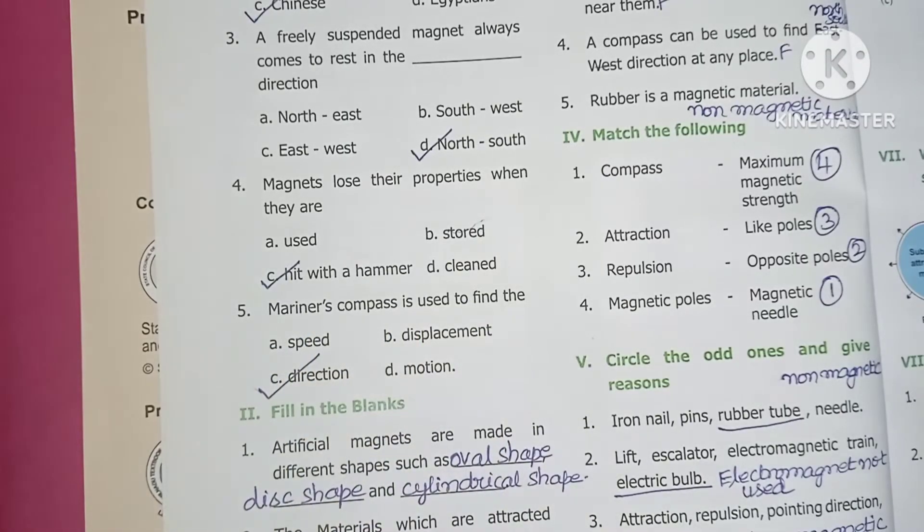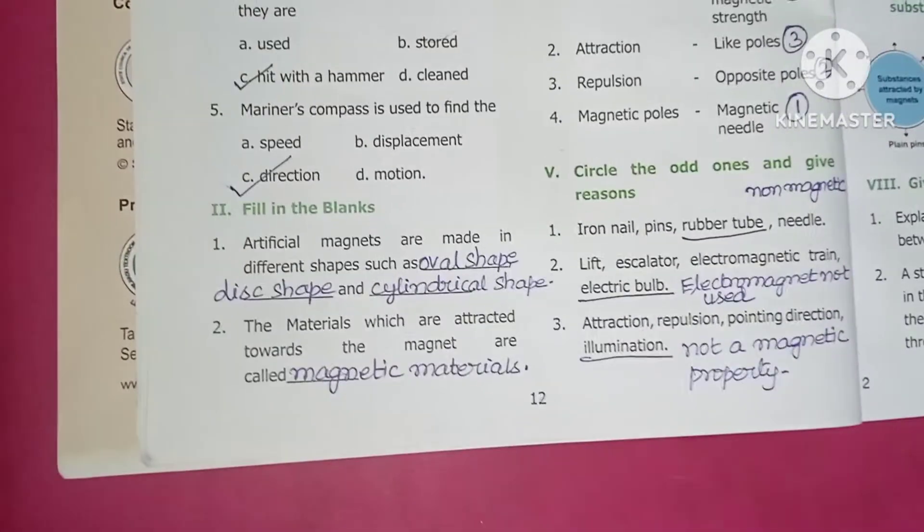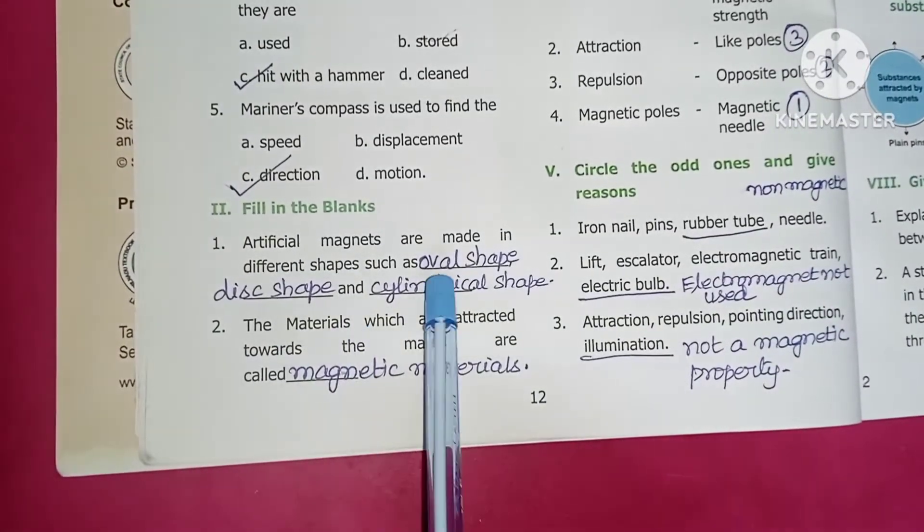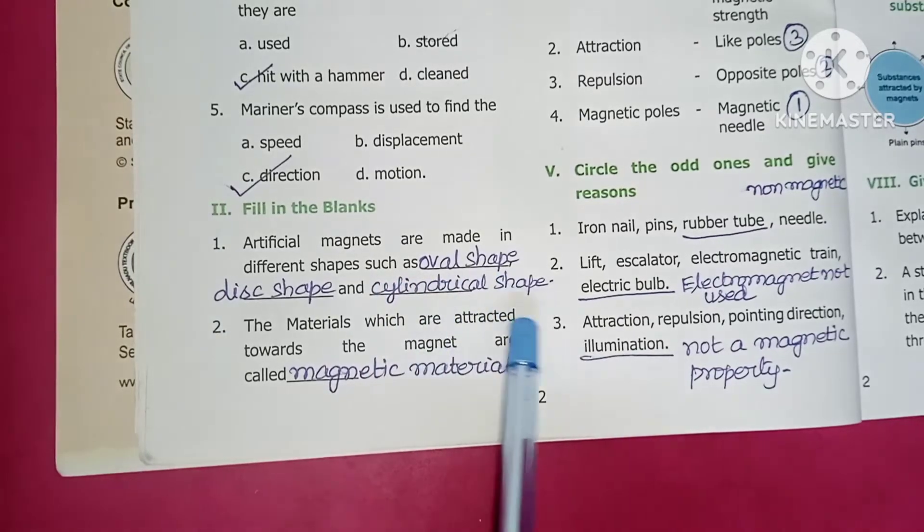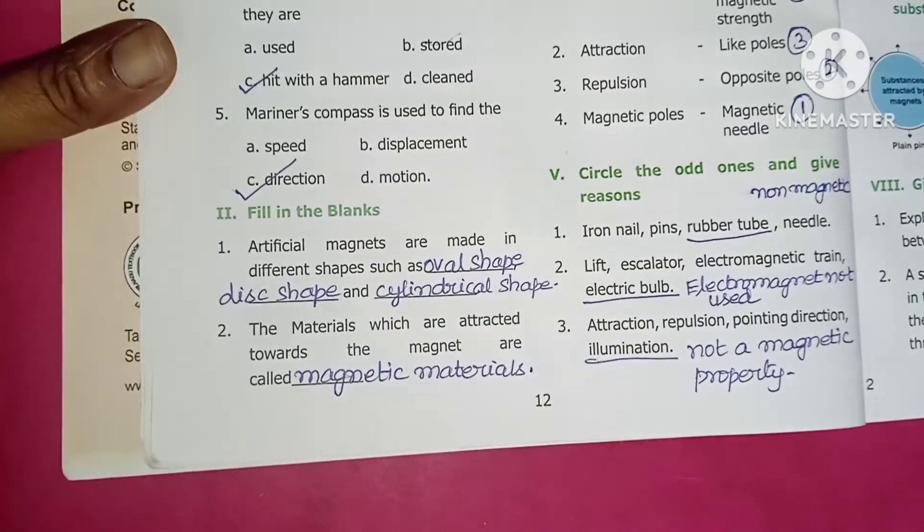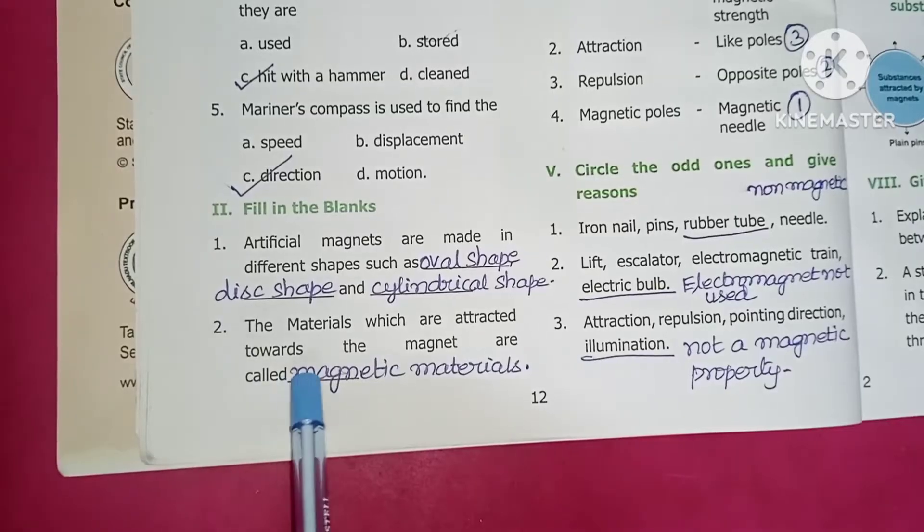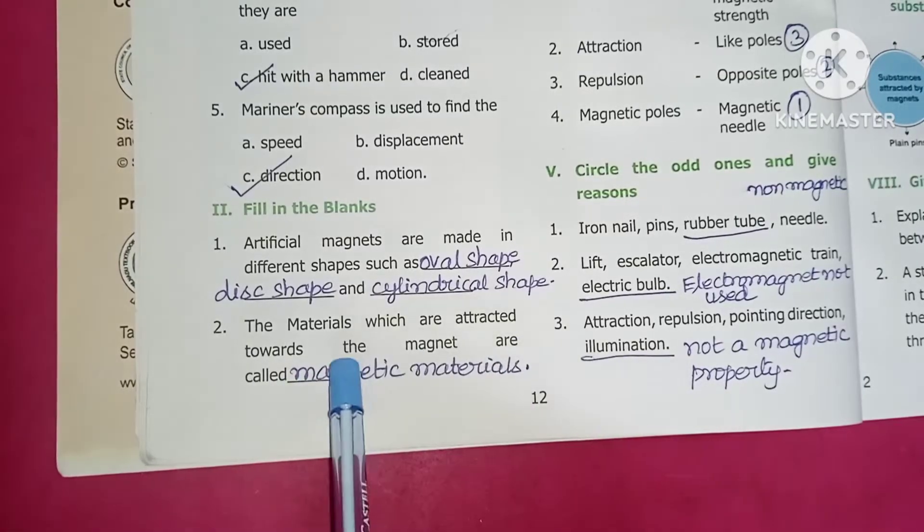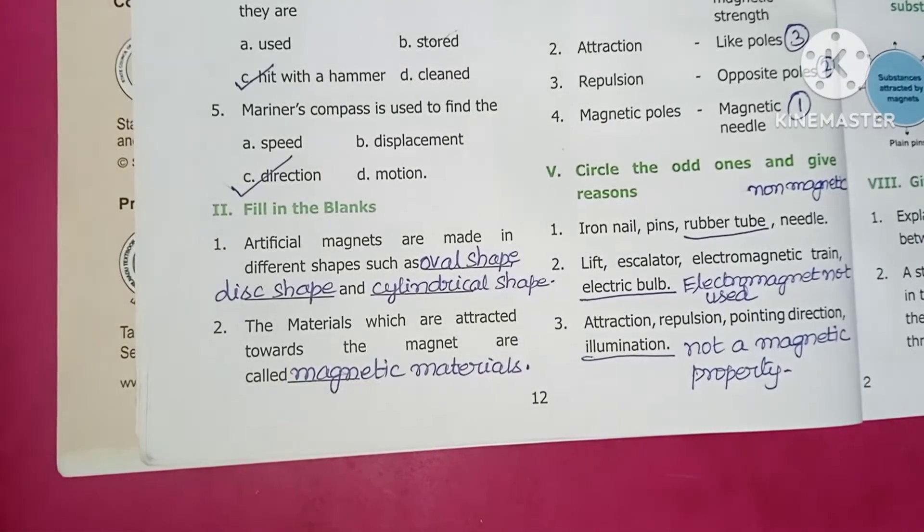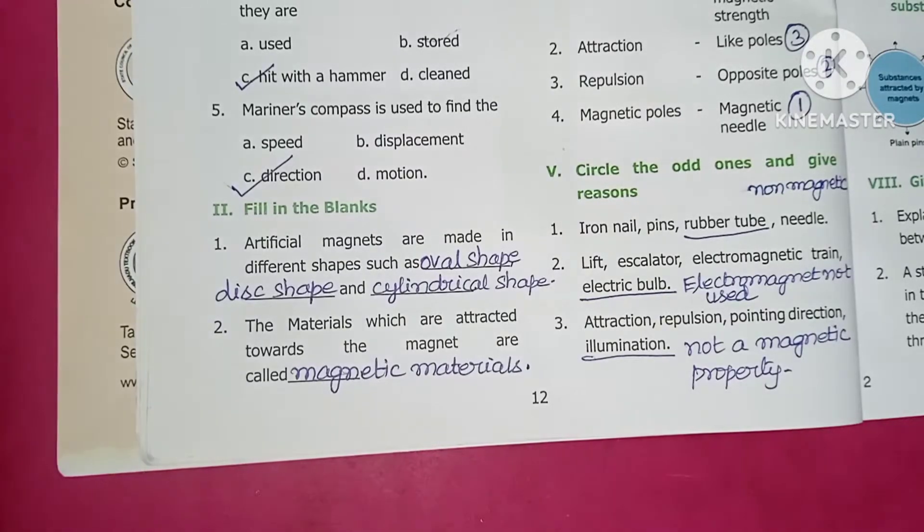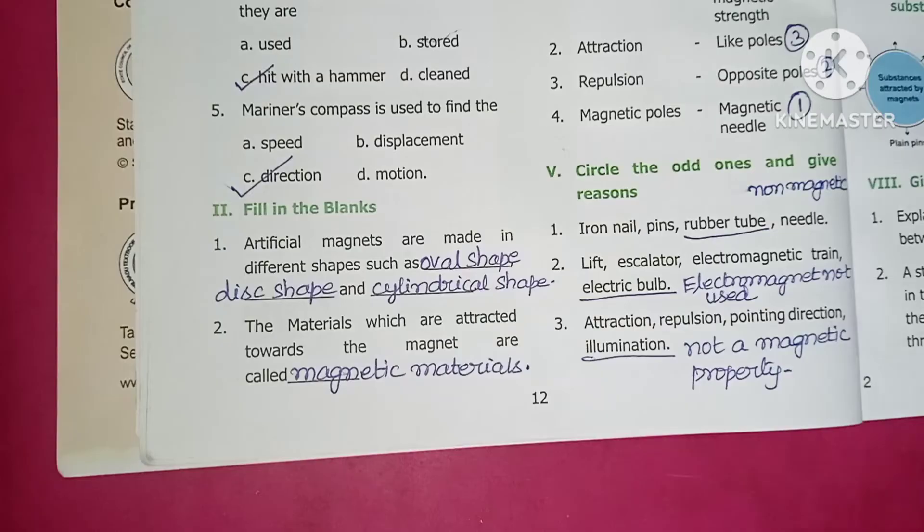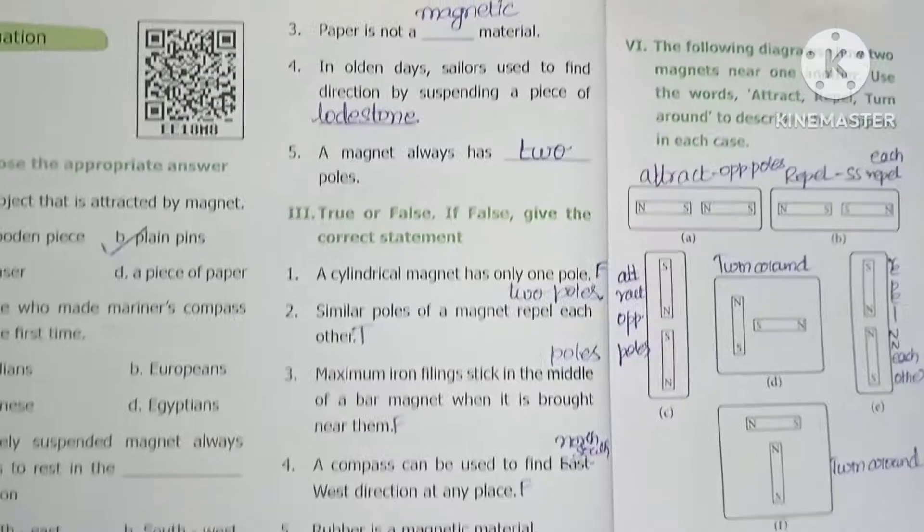Next fill up. Artificial magnets are made in different shapes such as oval, disc and cylindrical shape. The materials which are attracted towards the magnet are called magnetic materials.